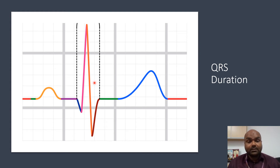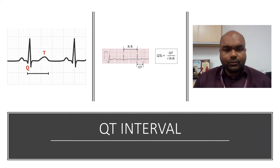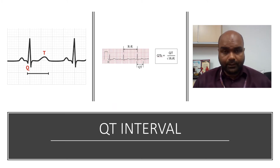Sometimes the QRS complex may be very narrow — less than one small box — which can happen in conditions such as supraventricular tachycardia. Next, let's look at the QT interval, which is measured from the beginning of the Q wave until the end of the T wave.